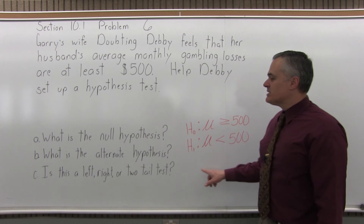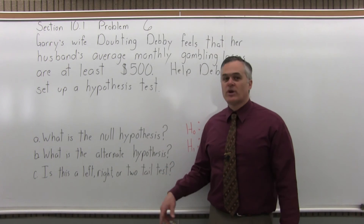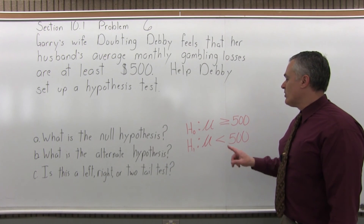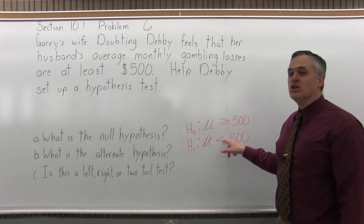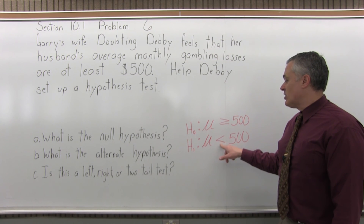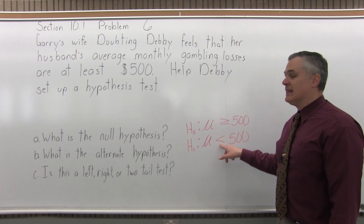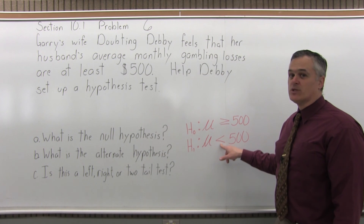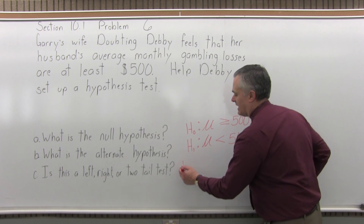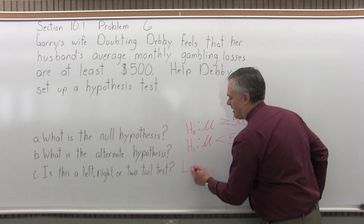Now part c: is this a left, right, or two-tailed test? To determine that, look at the inequality symbol in the alternate hypothesis. For this question, the inequality symbol in the alternate is a less than, which points to the left. So this is a left-tail hypothesis test.